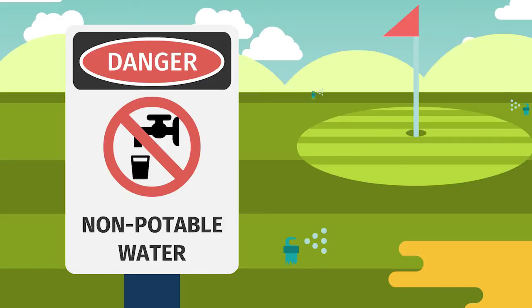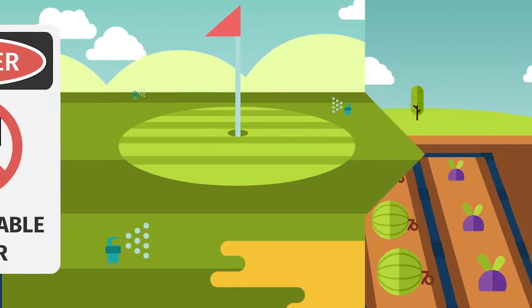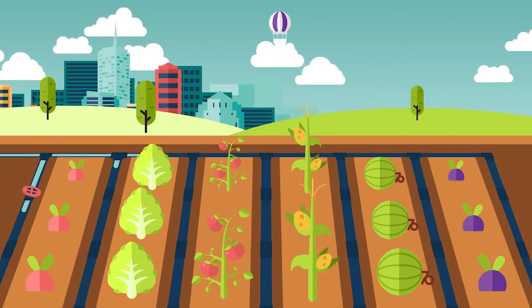Some recycled water already irrigates landscape. And when it is used for food crops, it has to be held to higher standards.